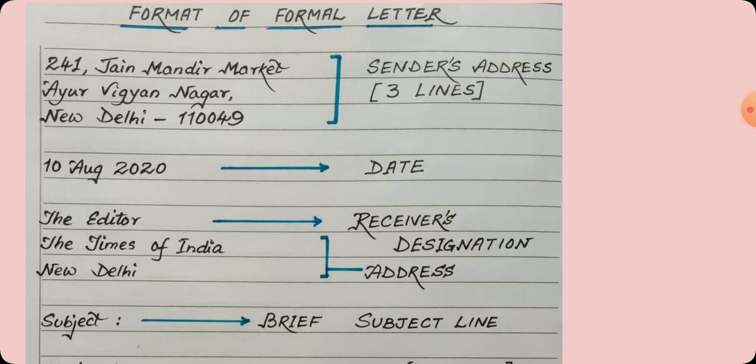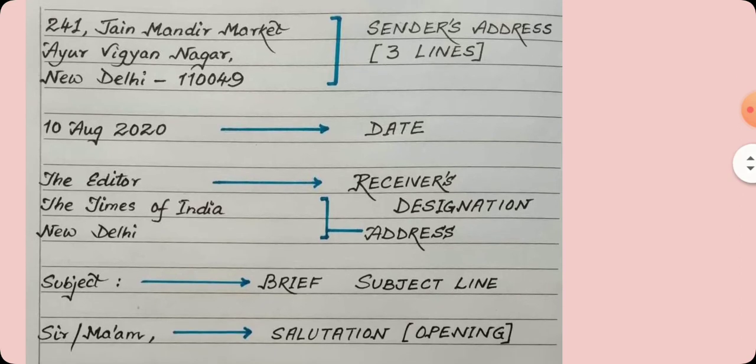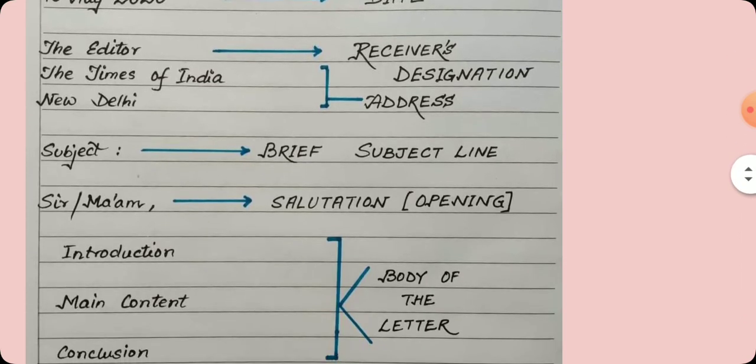Again, leaving a gap of one line, we are mentioning the subject. This subject should be contained in a single line. Again, leaving a line gap, we write the salutation — Sir or ma'am. There is no need to write 'respected' or 'dear'. Let's also note the spelling of ma'am. When writing ma'am, make sure you write M-A apostrophe A-M. You mostly write M-A-M or M-U-M, but that is wrong.